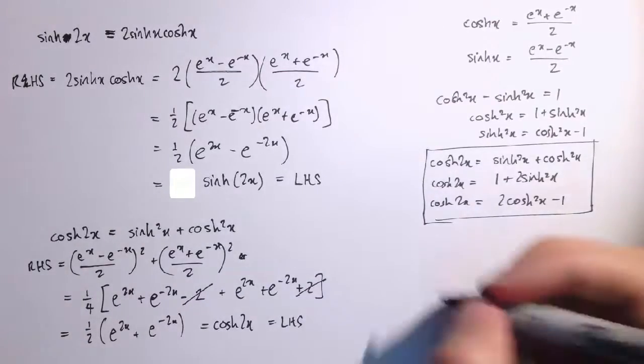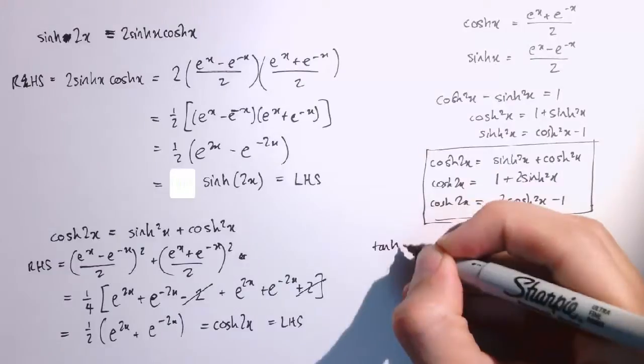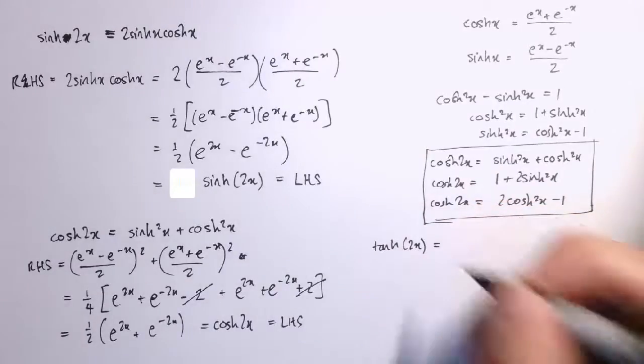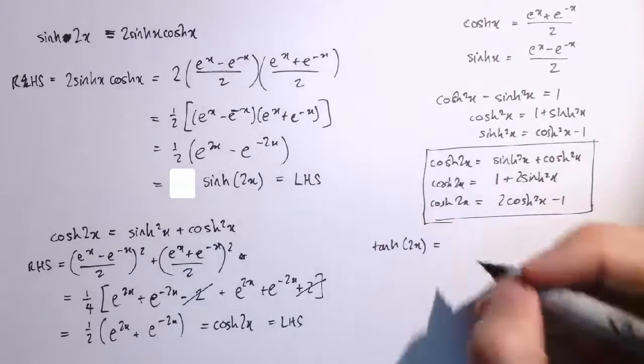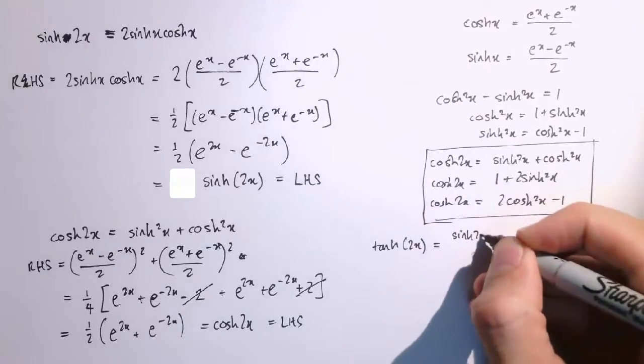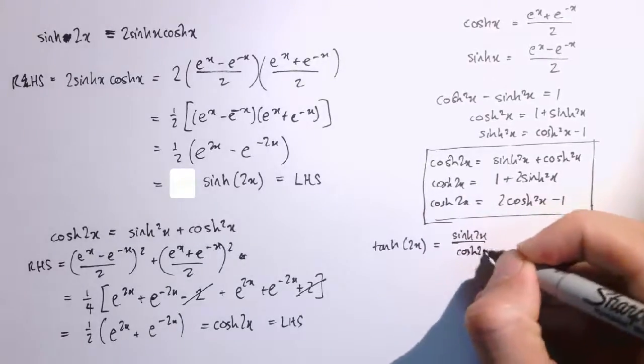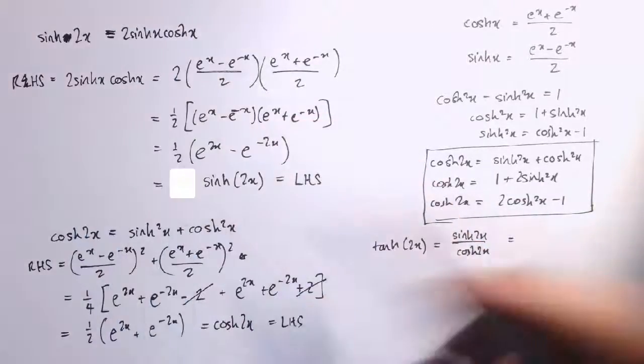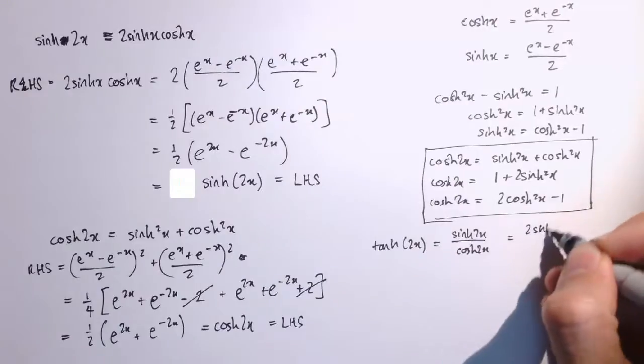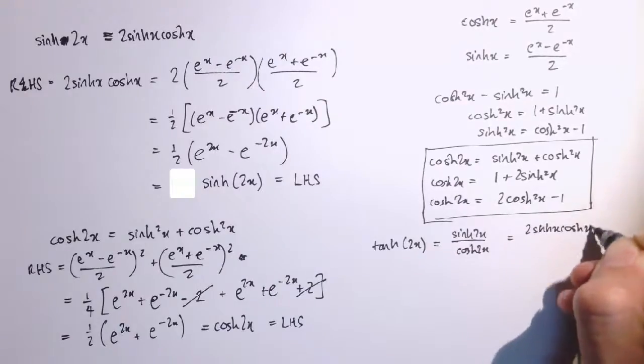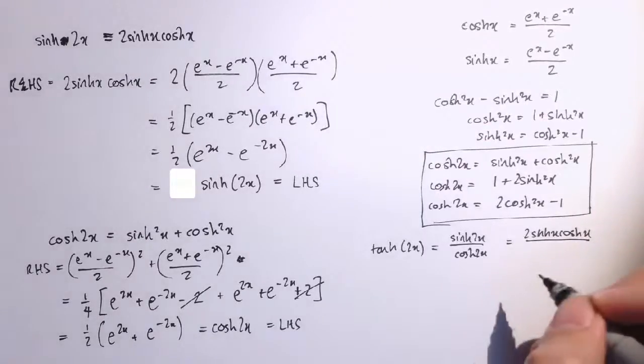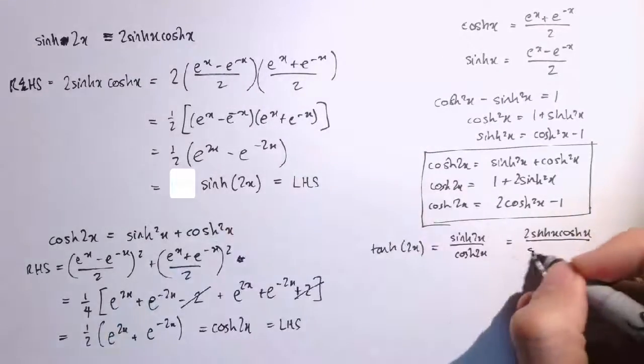The final one to look at is tanh 2x, and tanh 2x is sinh 2x divided by cosh 2x, and if I combine these two results I've just got here then, sinh 2x is 2 sinh x cosh x, and cosh 2x is sinh squared x plus cosh squared x.